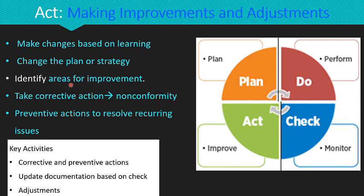By continuous improvement, we can help our organization adapt to new changes, resolve recurring issues and enhance performance. At this stage we take corrective actions to address non-conformities before proceeding to the next cycle, and preventive actions to resolve recurring or repeated issues. Key activities in the act phase include corrective and preventive actions, updating working documents based on lessons learned in the check phase, and either setting new goals or adjusting strategies for the next PDCA cycle.